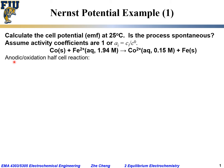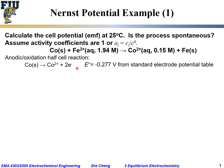For the anodic or oxidation half-cell reaction — anodic means oxidation, which means losing electrons — cobalt solid gives out electrons to form cobalt 2+. Based on the standard electrode potential table, the E0 standard electrode potential for this cobalt 2+/cobalt electrode would be minus 0.277 volts.